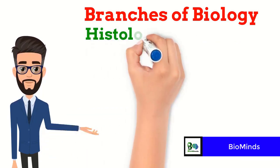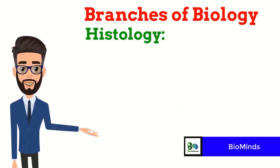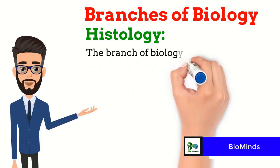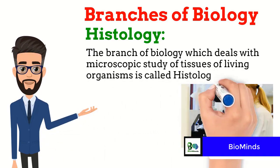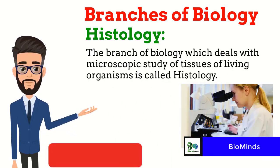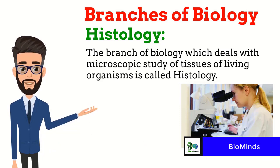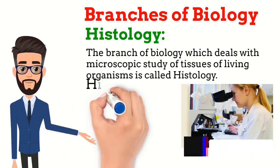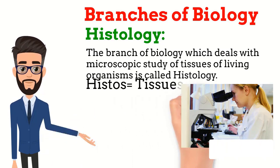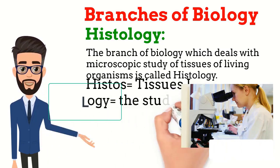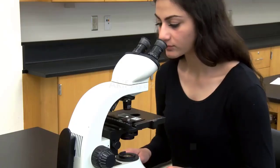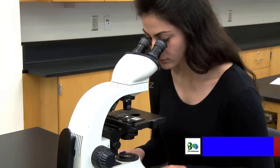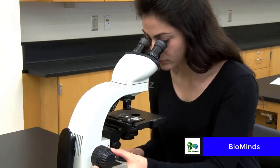The next branch is Histology. Its definition is: the branch of biology which deals with the microscopic study of tissues of living organisms is called histology. That is, studying the tissues of the body through a microscope. The word 'histos' means tissues and 'logi' means the study of — so it means the study of tissues through a microscope.